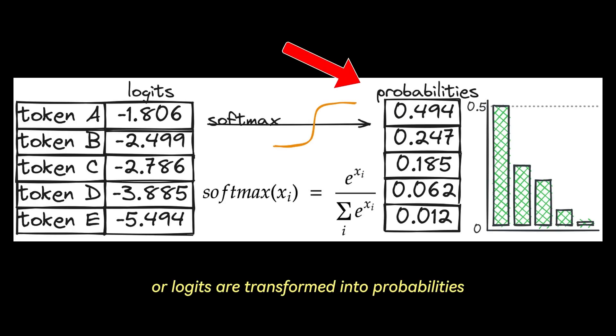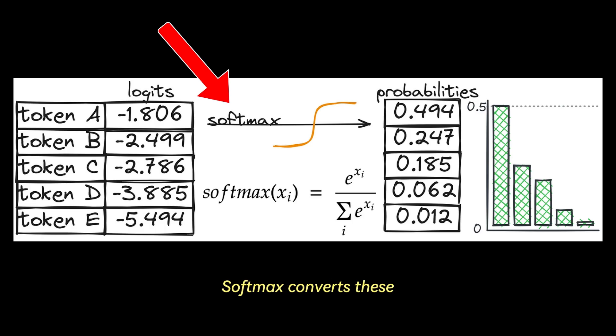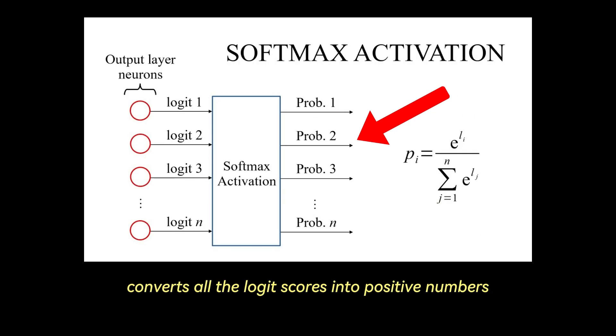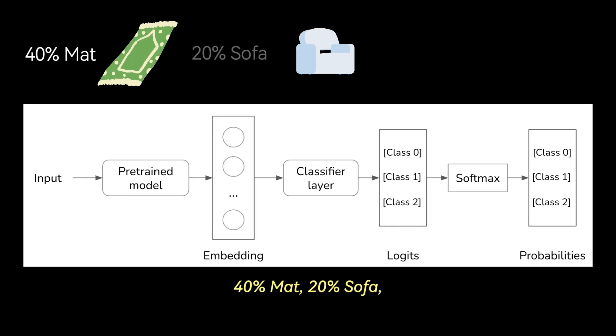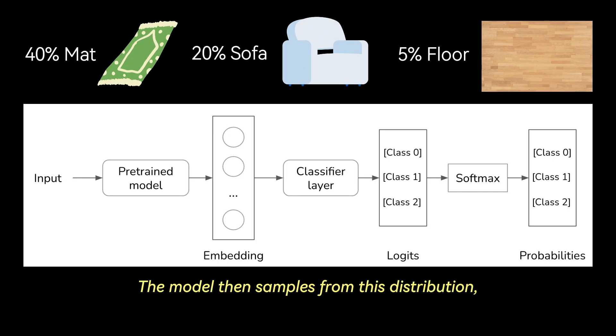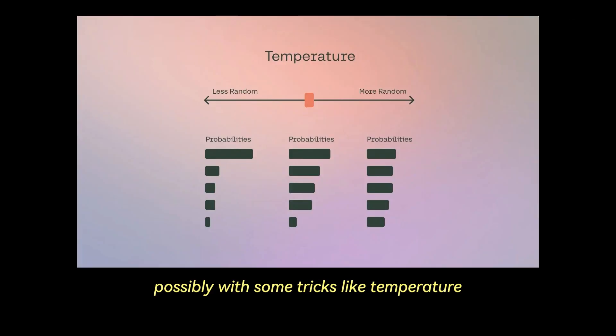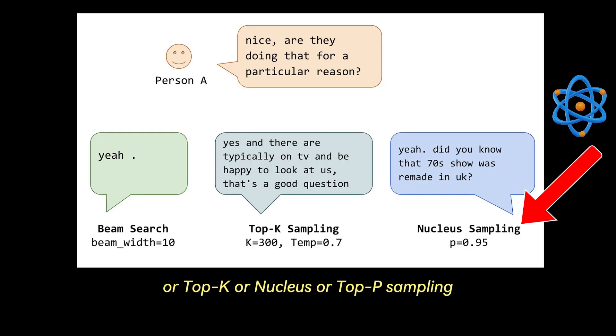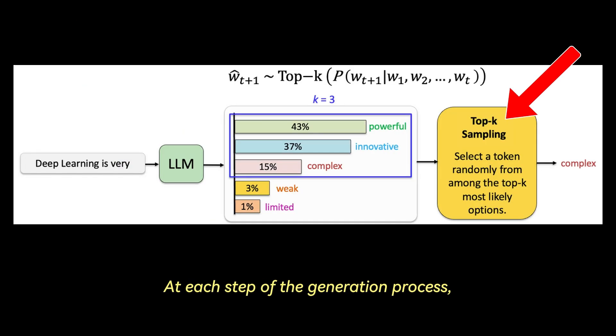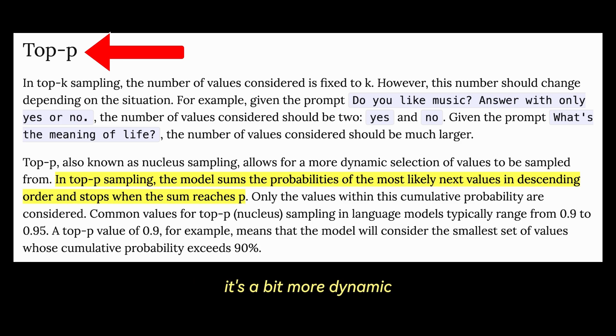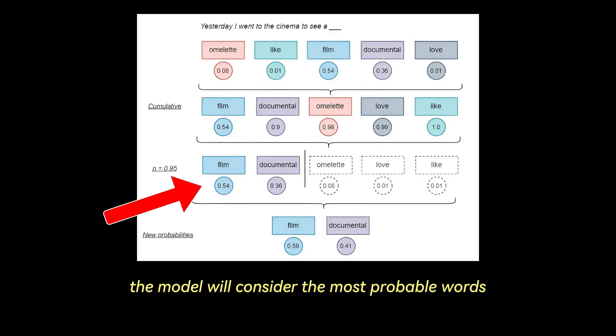Then, these scores or logits are transformed into probabilities using a softmax function. So softmax converts these raw scores into a more interpretable format. The function converts all the logit scores into positive numbers and normalizes these scores so they add up to 1. The top tokens might be, for instance, 40% mat, 20% sofa, 5% floor, and so on. The model then samples from this distribution, possibly with some tricks like temperature to control the randomness or top k or nucleus or top p sampling. Top k sampling is very straightforward. At each step of the generation process, the model considers only the k most likely next words. For nucleus or top p sampling, it's a bit more dynamic. Instead of selecting a fixed number of top words, it chooses the smallest possible set of words whose cumulative probability exceeds a certain threshold, p. For example, if p is set to 0.9, the model will consider the most probable words until their combined probability reaches 90%.